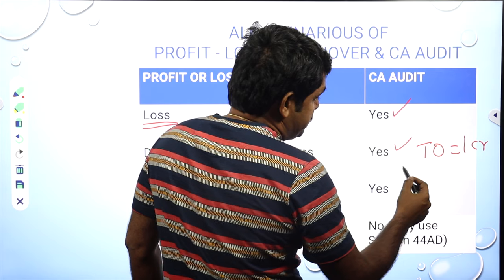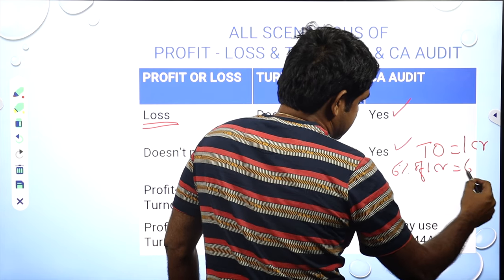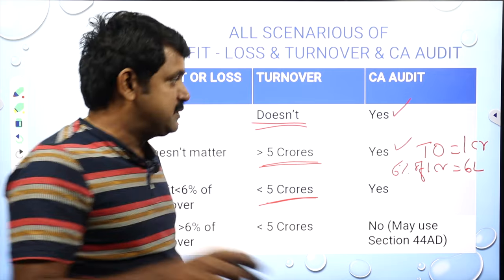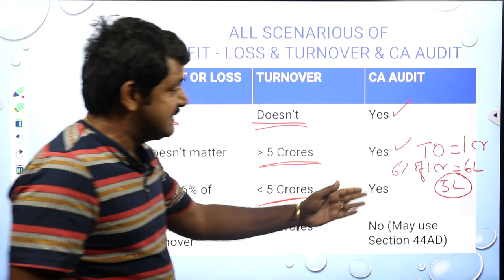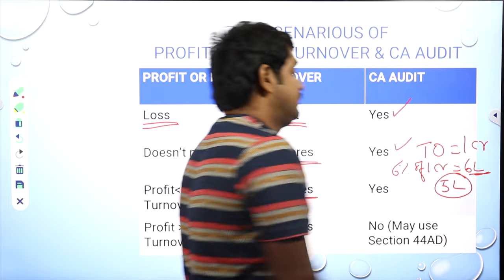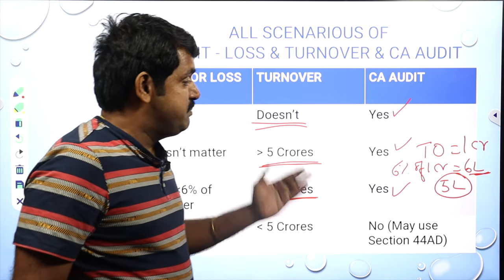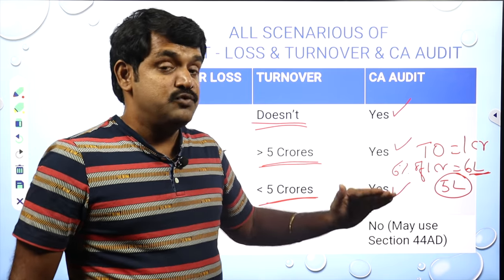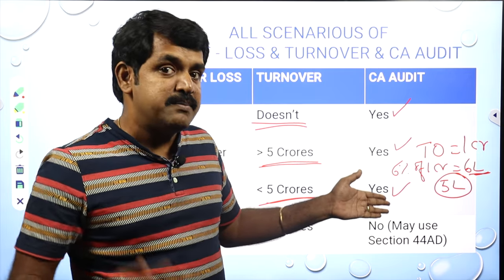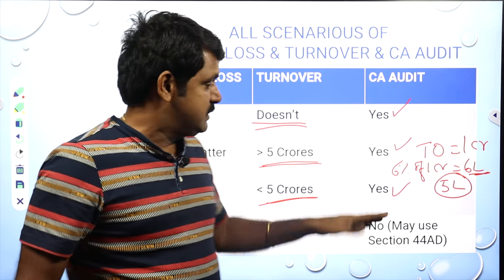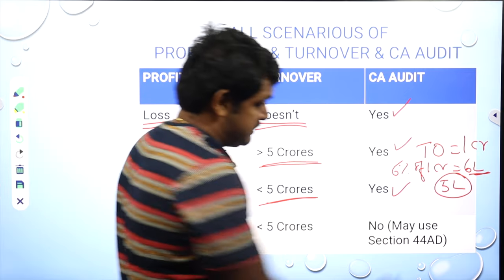For example, if your turnover is one crore, the minimum profit is six percent of one crore, which is six lakhs. If as per your back office you are making only five lakhs profit — less than the minimum — then you have to go for tax auditing, because the Income Tax department believes that if you make less than the minimum profit, you may be misreporting. A CA audit can certify your actual numbers.